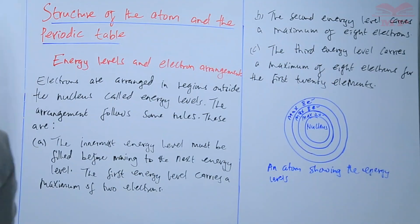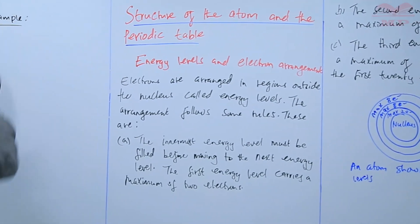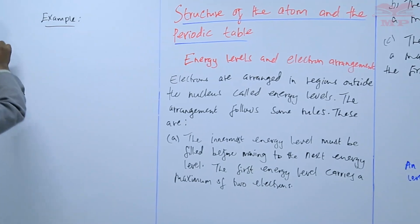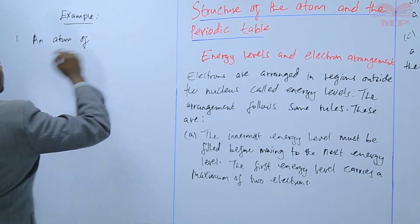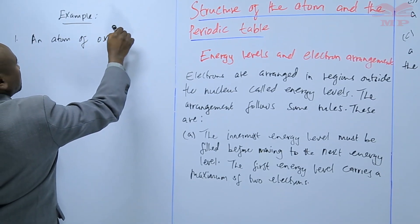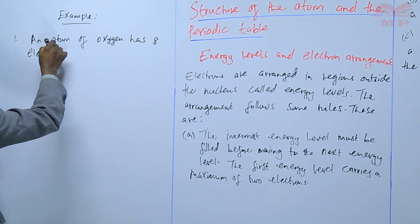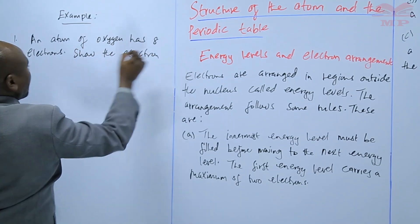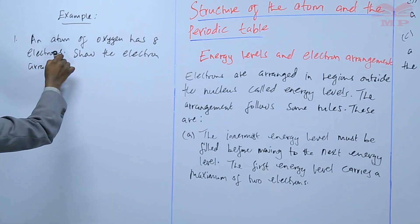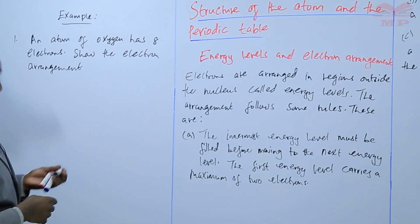Here is an example. An atom of oxygen has eight electrons. We are supposed to show the electron arrangement.